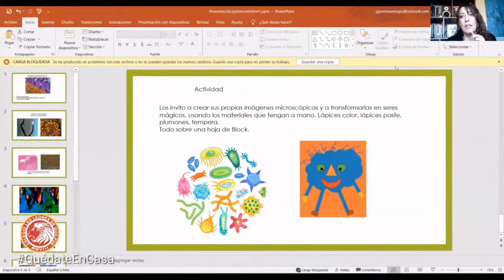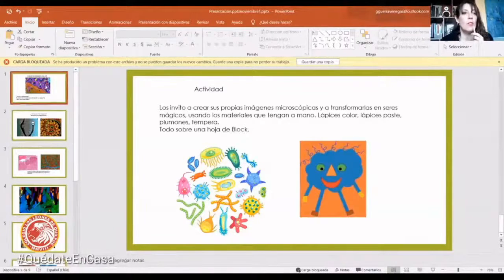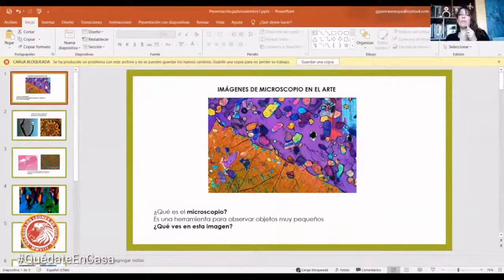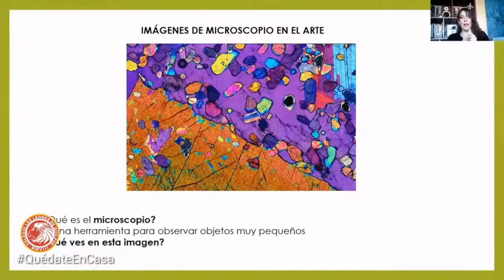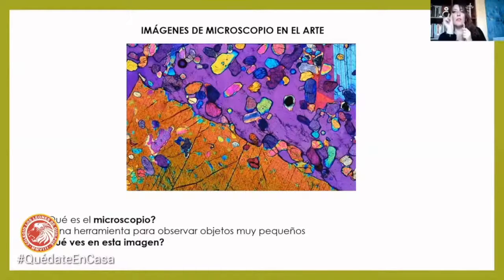Cómo todas estas imágenes bonitas pueden inspirar a muchos pintores que nosotros conocemos y ellos hacen sus obras, sus pinturas, tomando en cuenta todas estas imágenes. Vamos a partir con una imagen muy bonita que encontré de microscopios. Pero primero que nada saber qué es lo que es un microscopio. El microscopio es una herramienta para observar elementos muy pequeñitos, objetos muy pequeñitos, pueden ser objetos de la naturaleza.